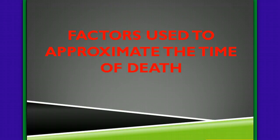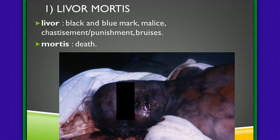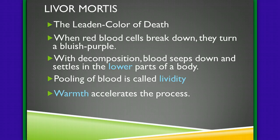So what are the factors that are used to approximate the time of death? This is where it gets interesting. Livor mortis is one of the things that a coroner or on-site detective is going to look for. This body here is obviously fully into livor mortis. It's given that name because the word 'liver' refers to black and blue markings — usually associated with bruising. Mortis means upon death, so we start to see changes in color upon death. Livor mortis is known as the leaden color of death.